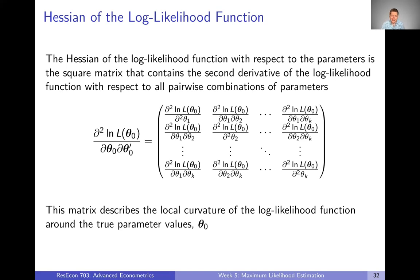This looks a bit messy, but one nice thing is that when we're doing optimization, R will calculate this matrix for us. Intuitively, what this matrix is doing is describing the local curvature of the log-likelihood function around the true parameter values. The second derivative tells you something about how curvy a curve or surface is, so this matrix tells us — as we move parameters in any possible direction — how curvy our log-likelihood function is, which tells us something about how precise our estimate is.